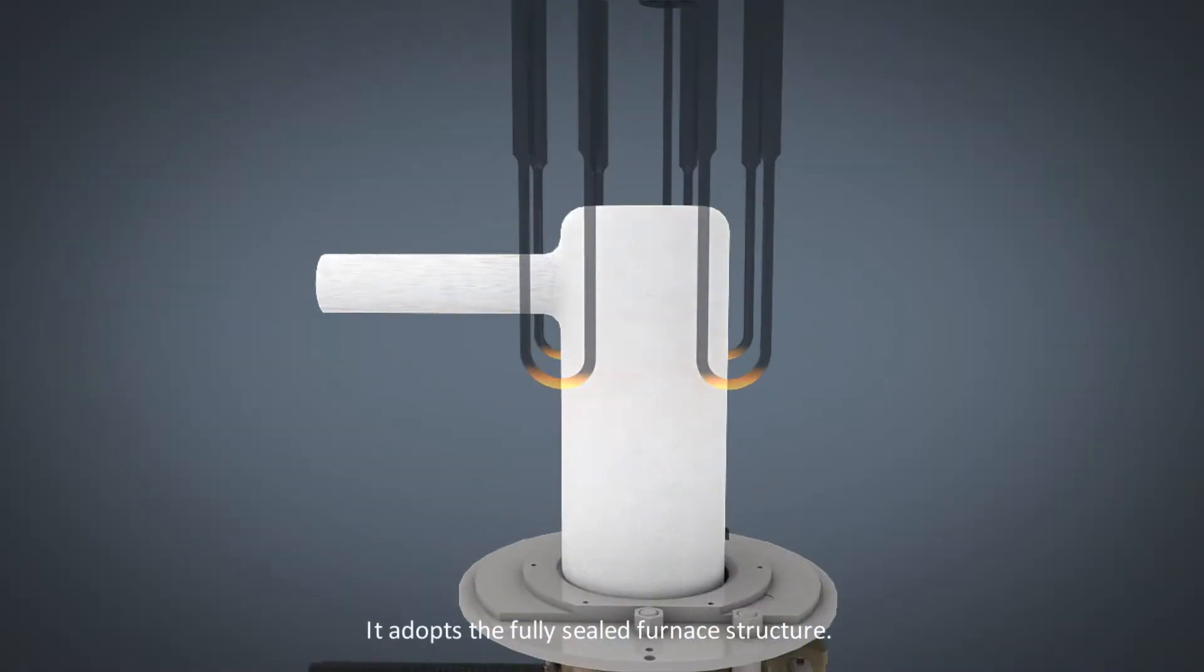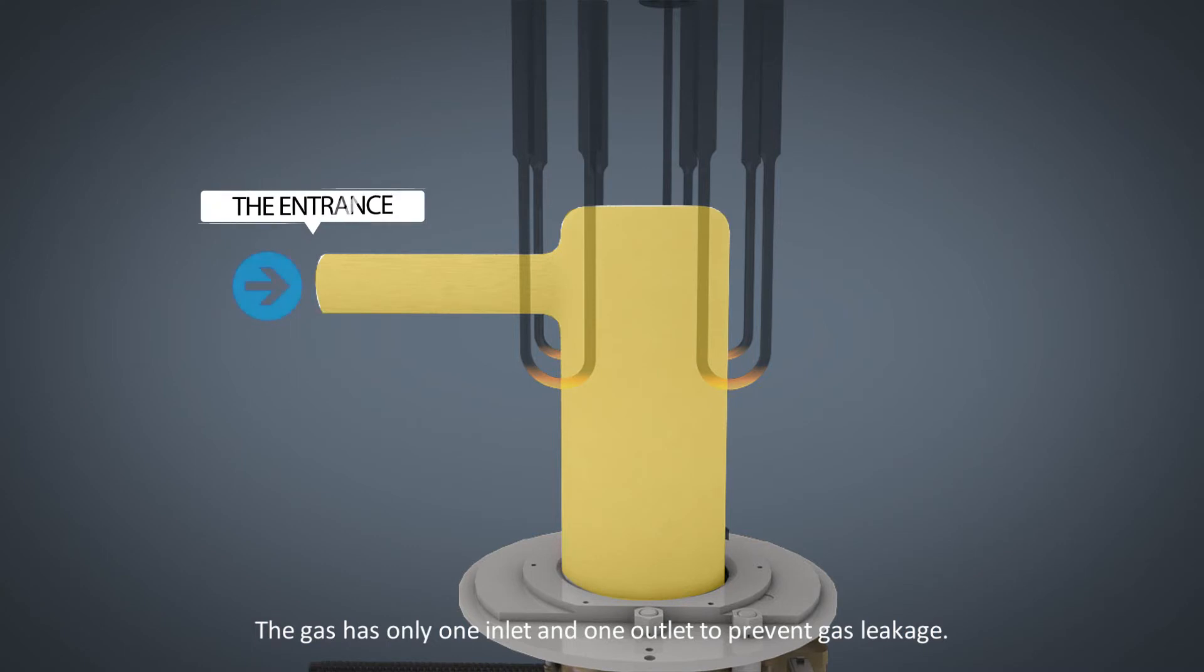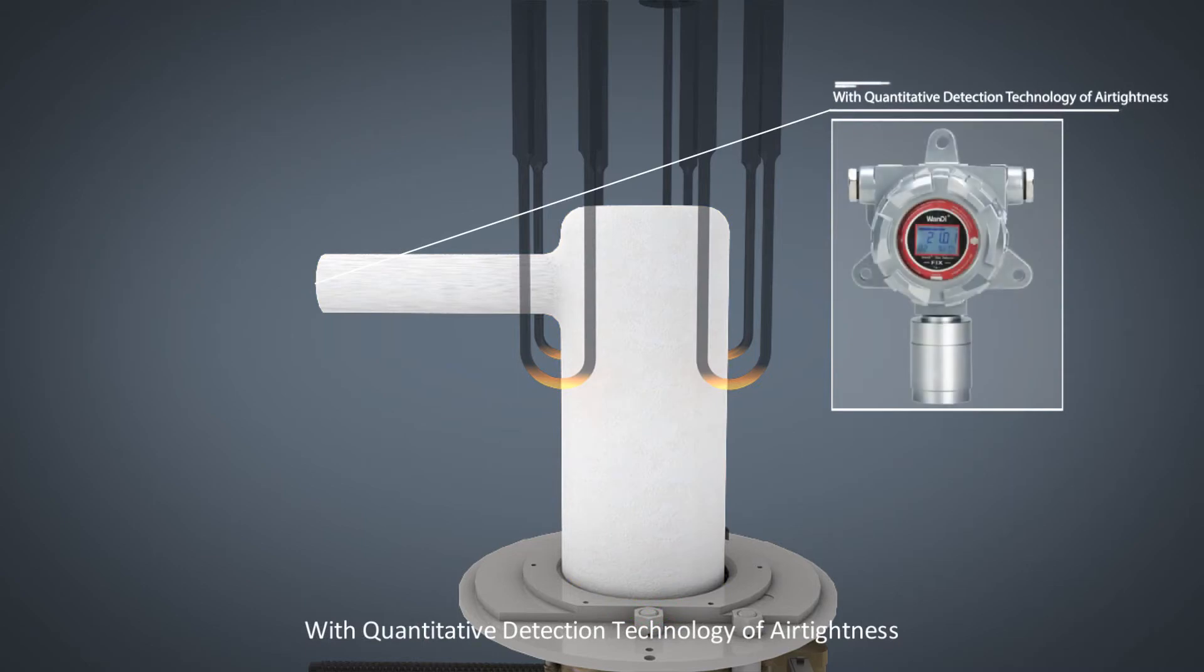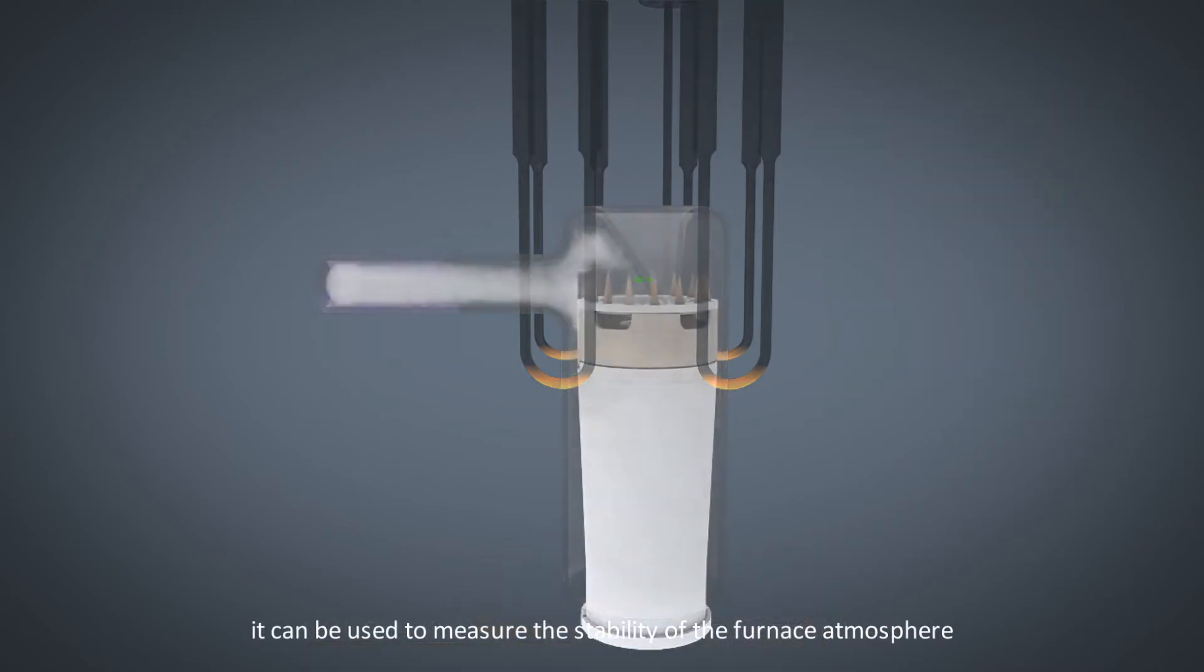First, it adopts a fully sealed furnace structure. The gas has only one inlet and one outlet to prevent gas leakage. With quantitative detection technology of airtightness, it measures the stability of the furnace atmosphere to get accurate analysis results.